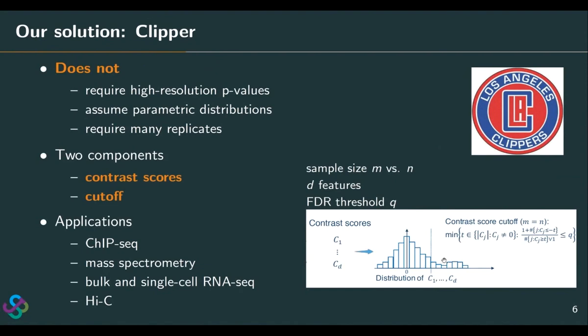We can call the features whose contrast scores lie to the right of the cutoff our discoveries. The name Clipper was motivated by the famous NBA team, LA Clippers, because we are based in LA. In our work, we have applied Clipper to four real applications: ChIP-seq data analysis peak calling, mass spectrometry analysis for identifying peptides, bulk and single-cell RNA-seq data for differential gene expression analysis, and Hi-C data for identifying differential interacting region pairs.